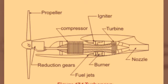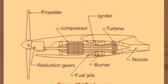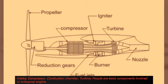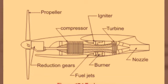compressor, combustion chamber, turbine, and nozzle. One propeller is also mounted ahead of the engine, which is connected by a shaft to the turbine along with a reduction gearbox.